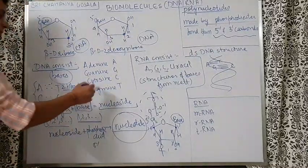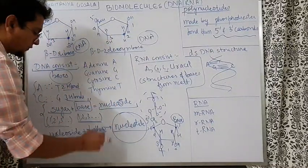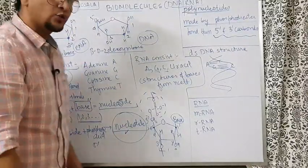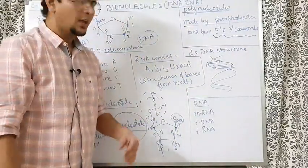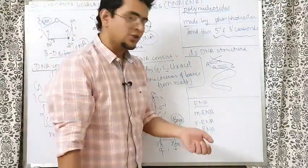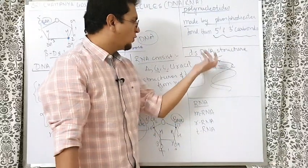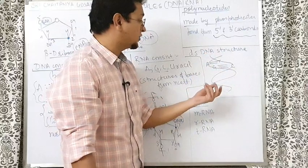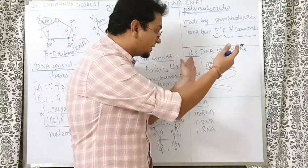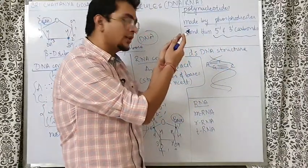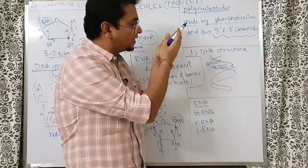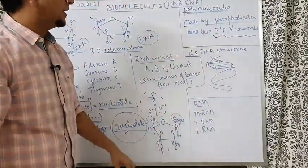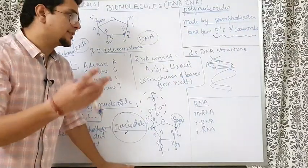To summarize: sugar plus base = nucleoside; nucleoside plus phosphoric acid = nucleotide; many nucleotides together = polynucleotide. Watson and Crick gave the double-stranded DNA structure. In the double-stranded structure, the two strands are held together by hydrogen bonding — A and T have two hydrogen bonds between them, and C and G have three hydrogen bonds between them.